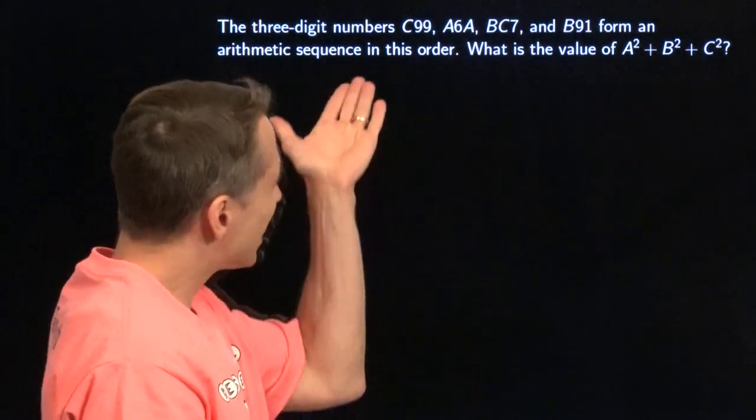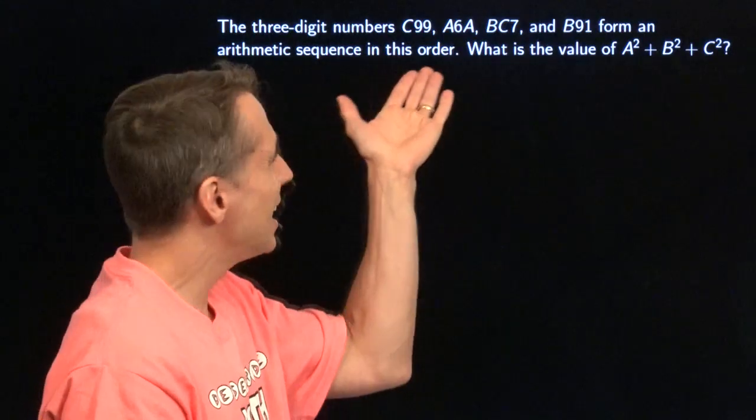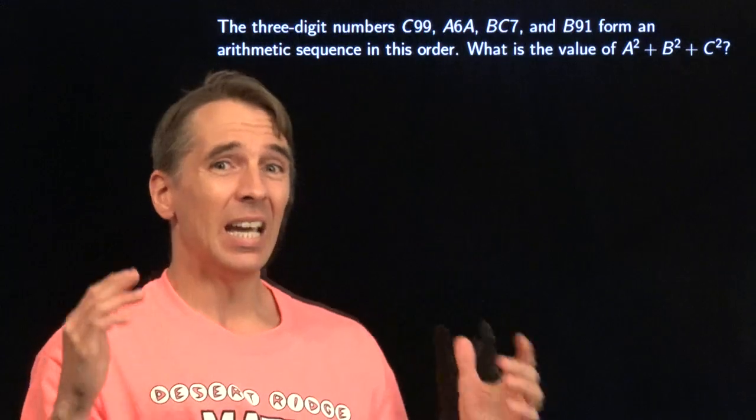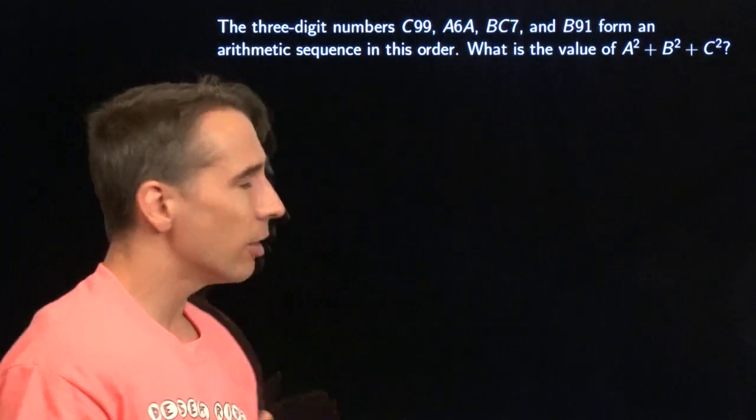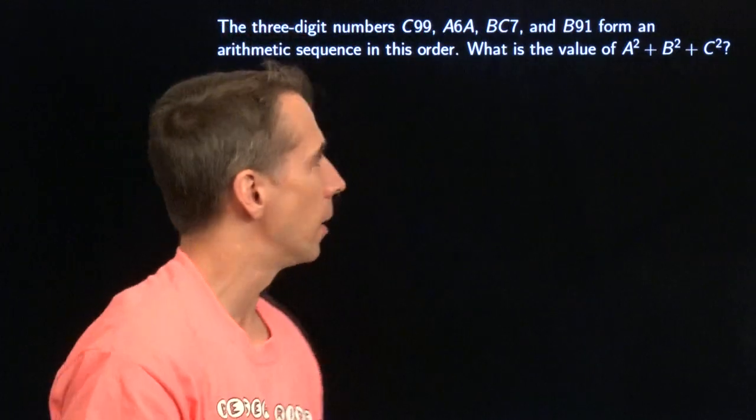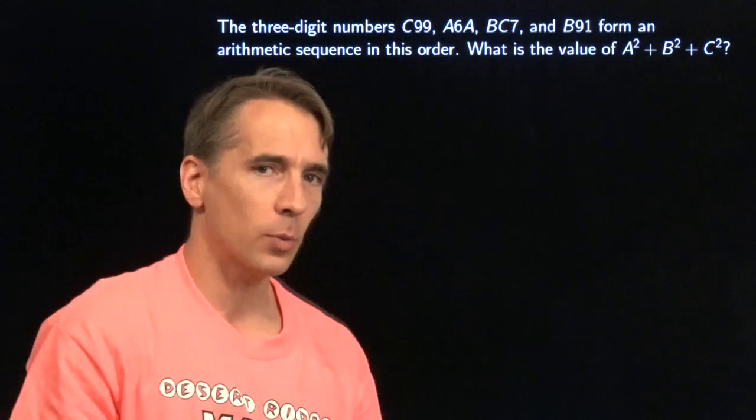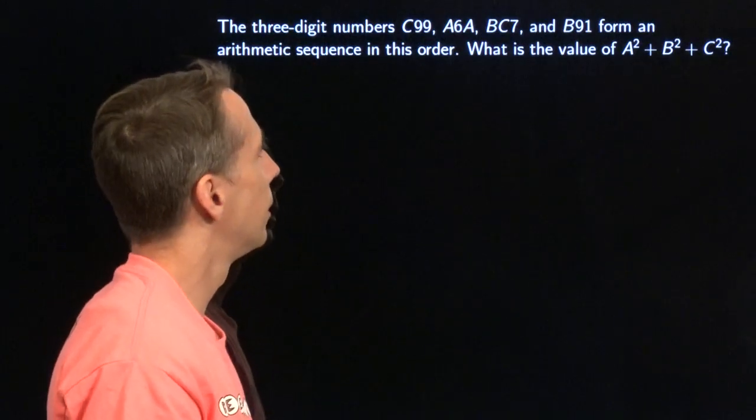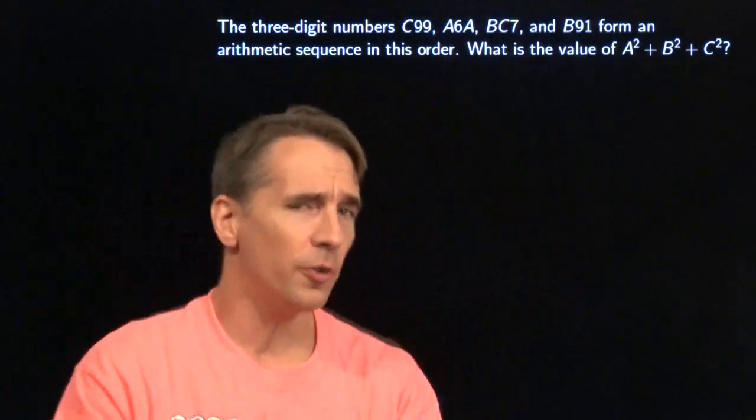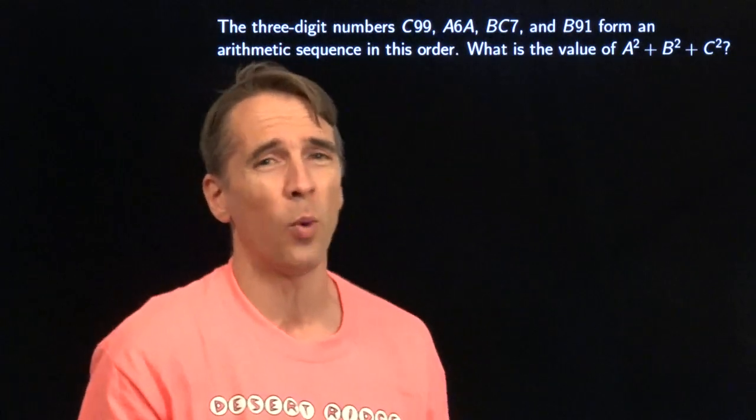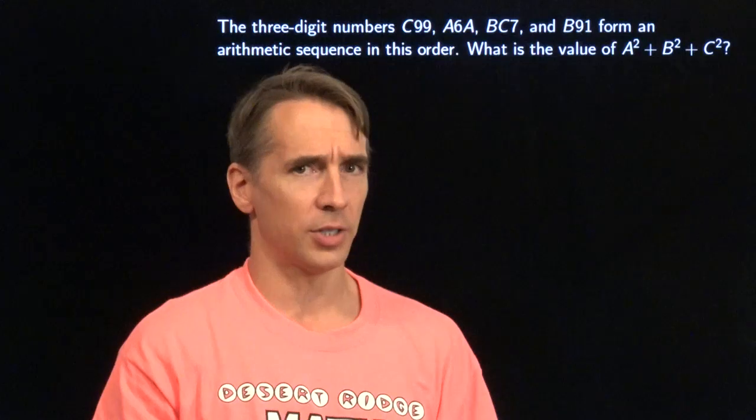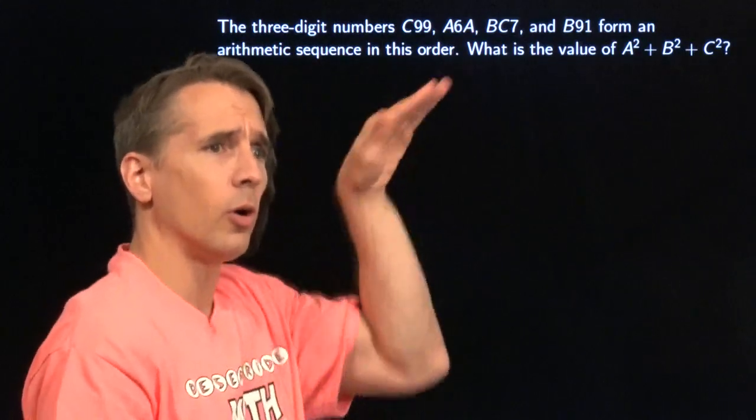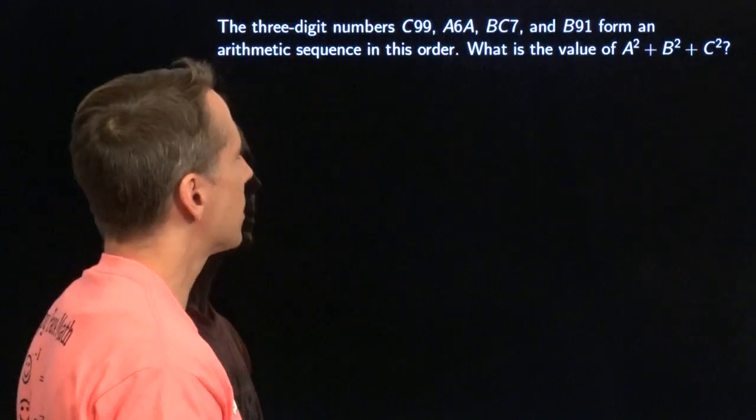The three-digit numbers, c99, a6a, bc7, and b91, they form an arithmetic sequence in this order. We have to find the value of a squared plus b squared plus c squared. It's a lot like that last problem. There's no fancy formula, it just solves this right away. We're going to have to jump in, mess around, see what we can figure out. Now, we have an arithmetic sequence here, but we don't know if that thing's going up or it's going down.